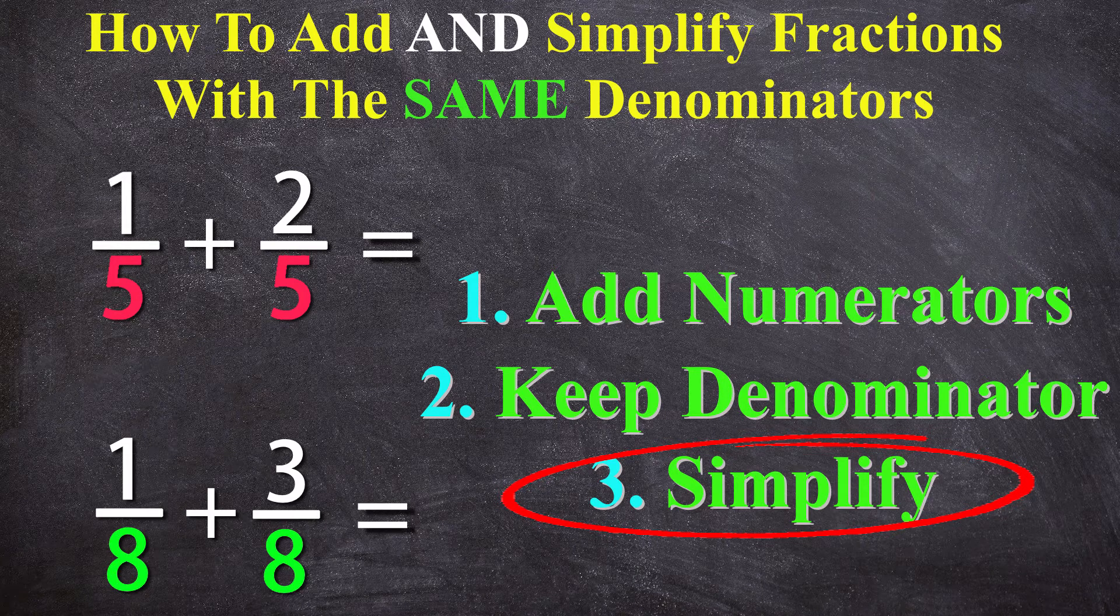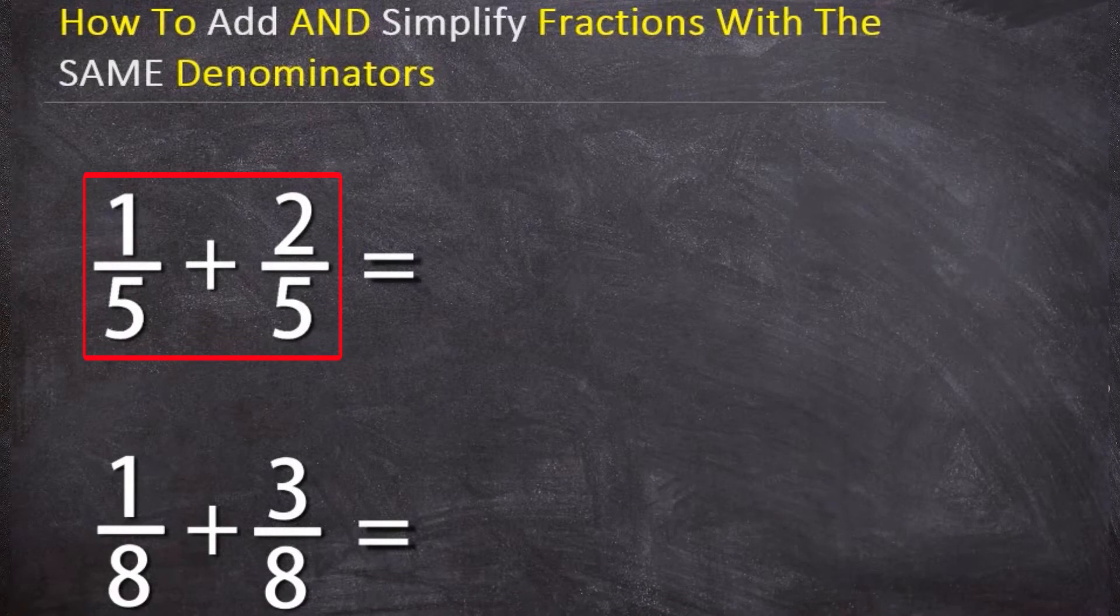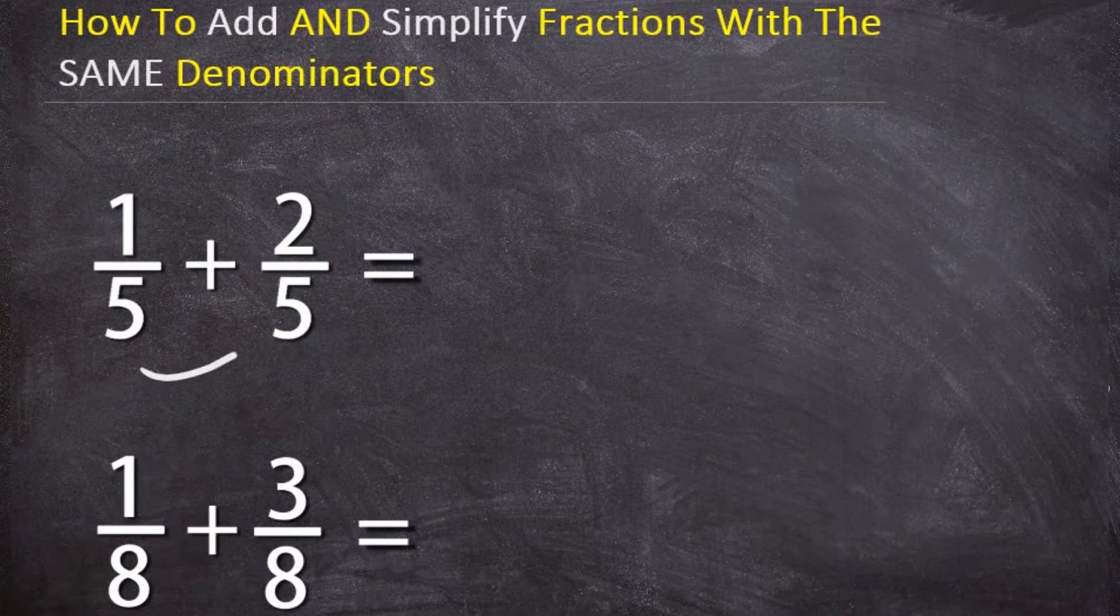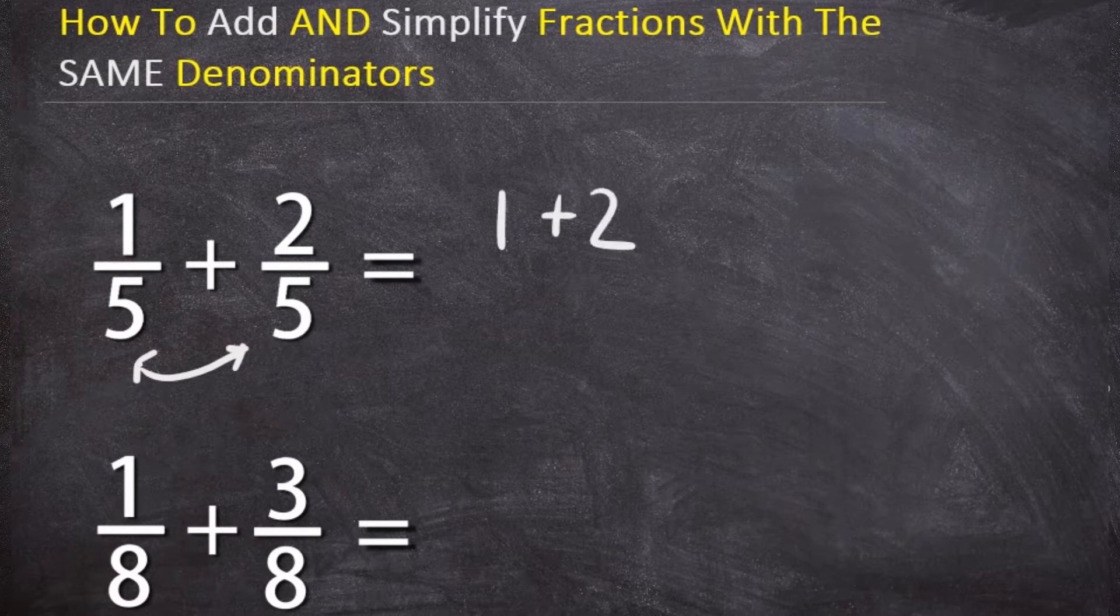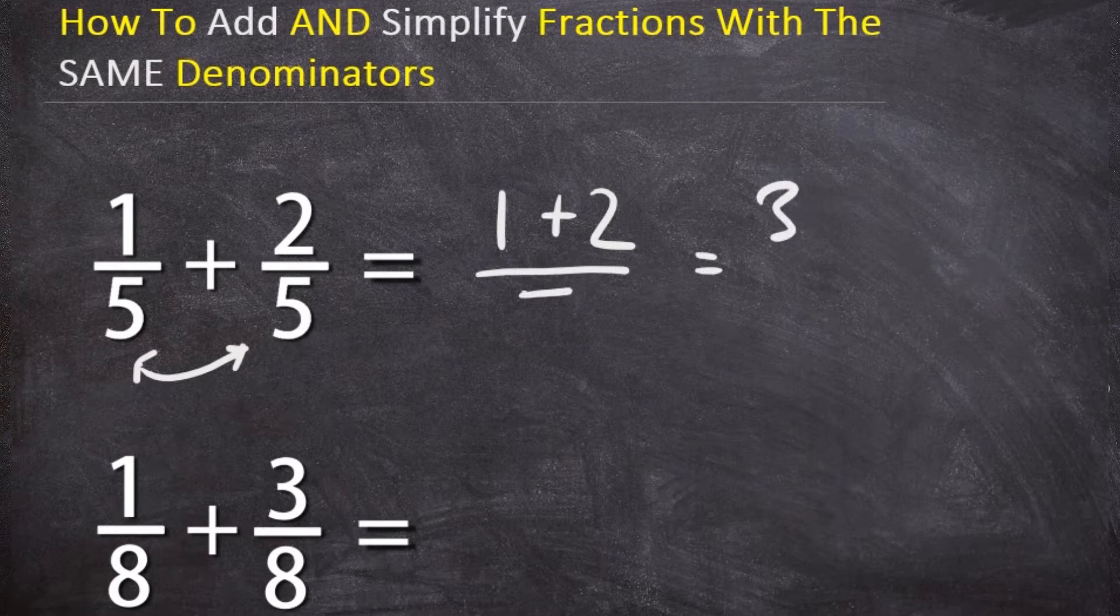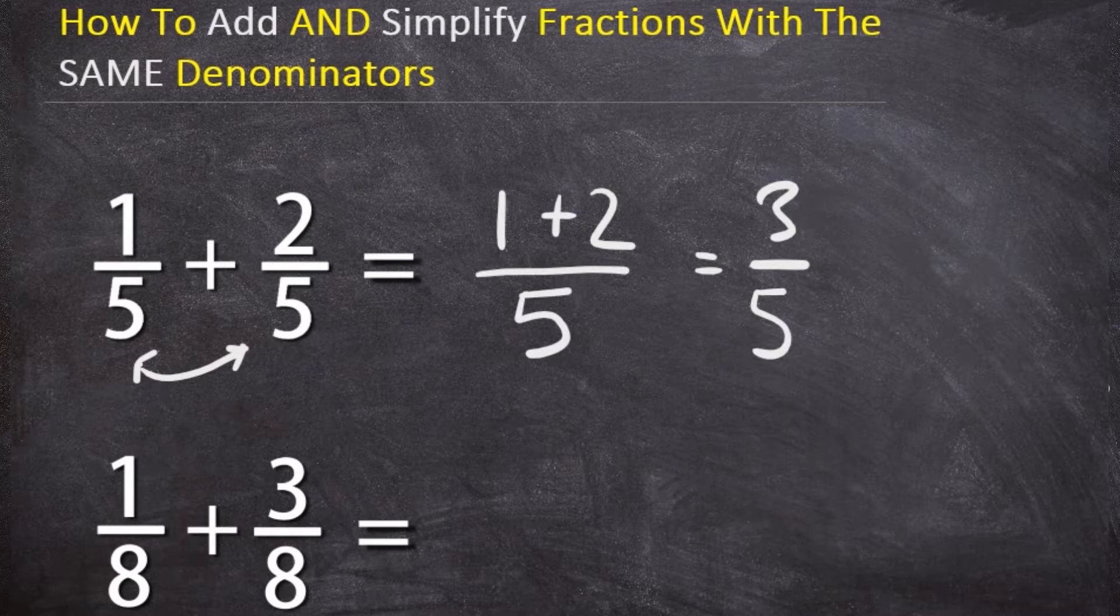Okay let's take this example: one over five plus two over five. You can already see that they have common denominators. The denominator five is the same for each fraction, so all we have to do is the first step which is add the two numerators. That's one plus two which gives us three, and then keep the denominator which equals five. So one over five plus two over five equals three over five. That's the addition part, simple right?